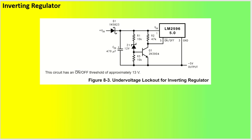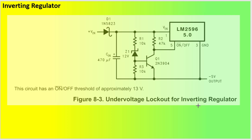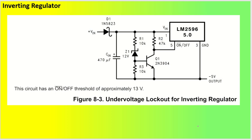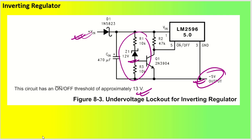The IC also supports an inverting regulator configuration. If the output is taken from the ground pin, you get a negative output voltage — making it very simple to design a negative rail. This particular circuit has an on/off threshold of approximately 13V, acting as an under-voltage lockout up to 13V.